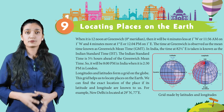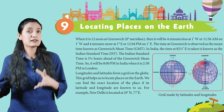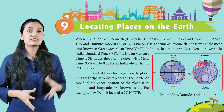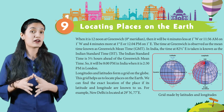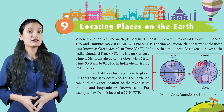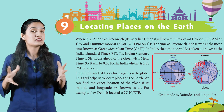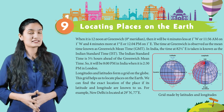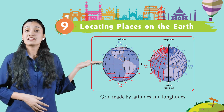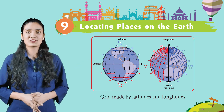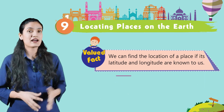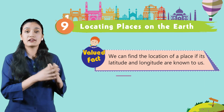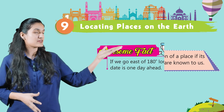Longitudes and latitudes form a grid on the globe. This grid helps us to locate places on the Earth. We can find the exact location of a place if its latitude and longitude are known to us. For example, New Delhi is located at 29 degrees North, 77 degrees East. Here you can see a picture of the grid made by latitudes and longitudes.